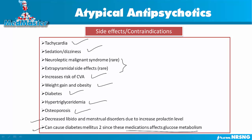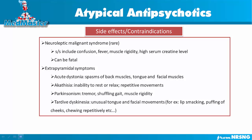The two most important side effects to know — and frequently tested on NCLEX — are neuroleptic malignant syndrome (NMS) and extrapyramidal side effects. NMS is rare with atypical antipsychotics but more common with conventional ones. Signs and symptoms of NMS include confusion, fever, muscle rigidity, and high serum creatinine levels. It can be fatal, so patients must be taught to call their doctor immediately if these occur.